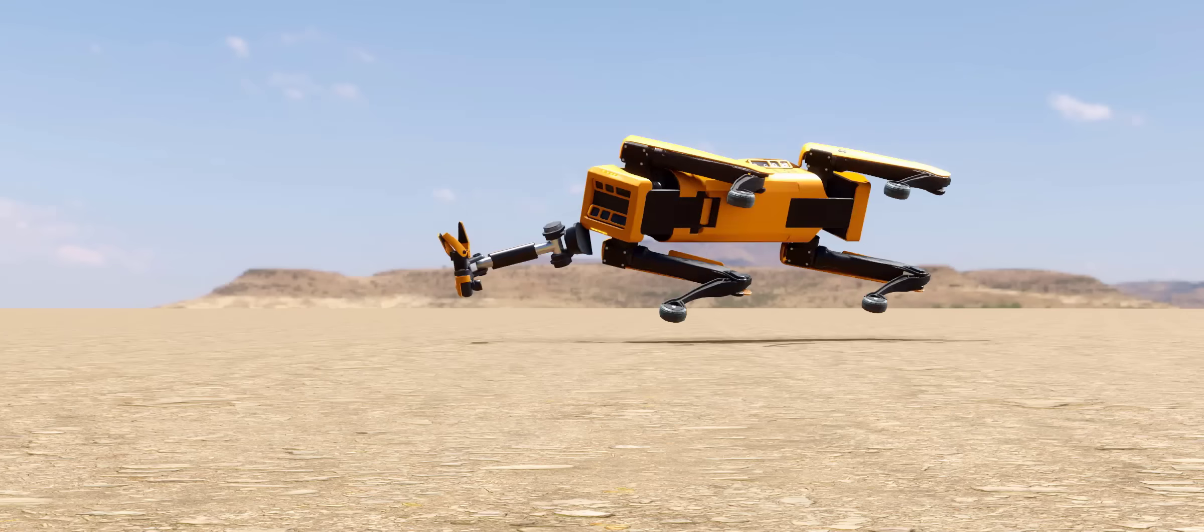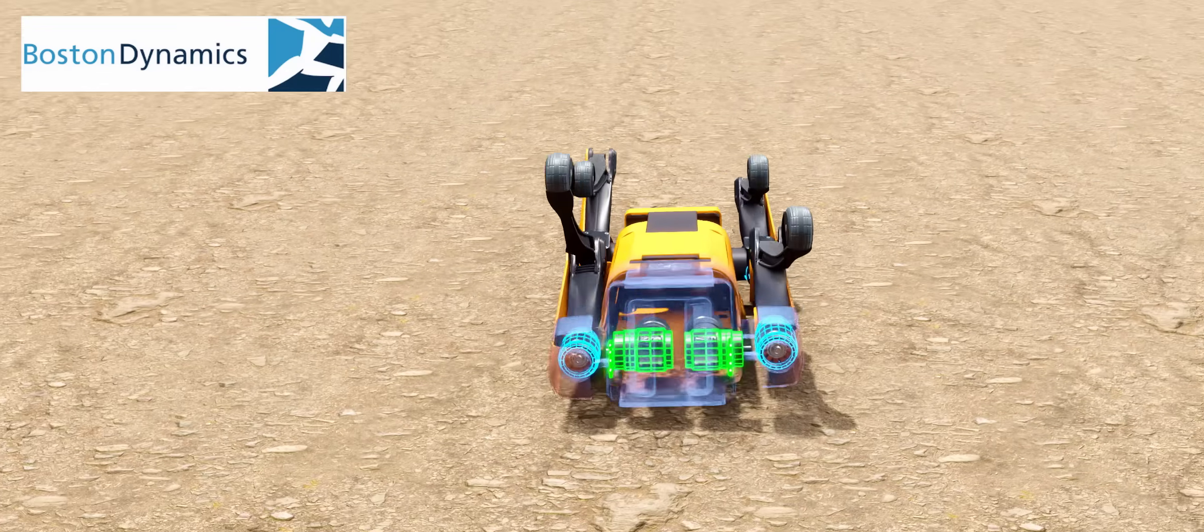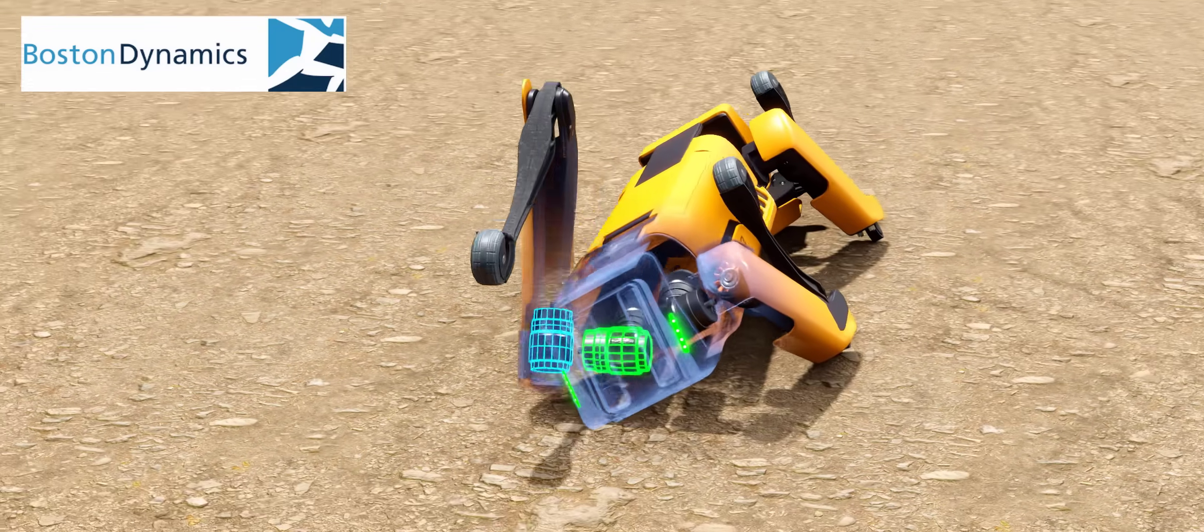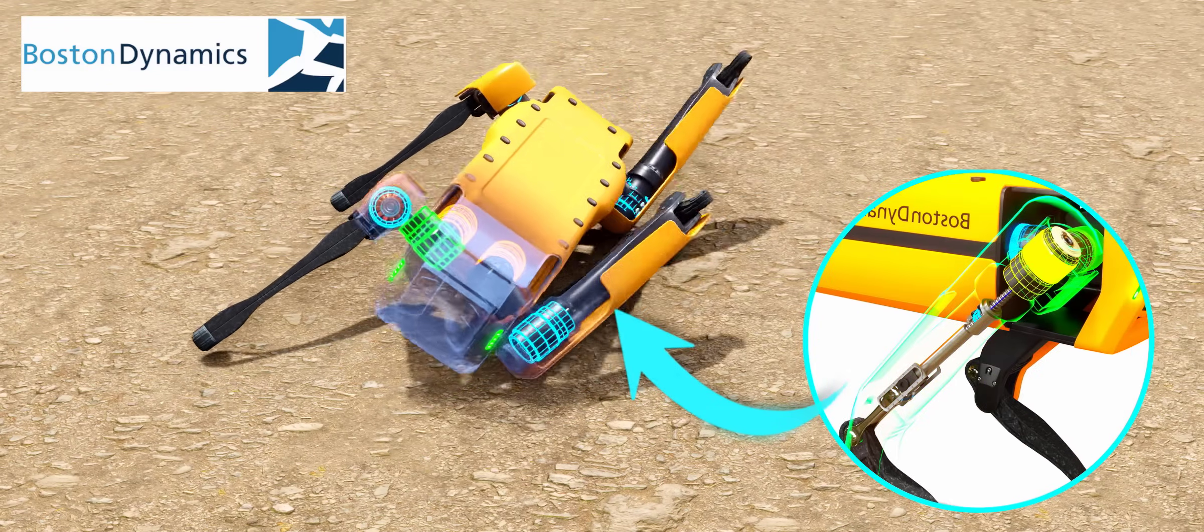A fall from almost 20 feet high, the Spot Robot of Boston Dynamics looks like a dead creature now, but it will recover like an intelligent animal with the help of its smart motor arrangement and intelligent mechanism.